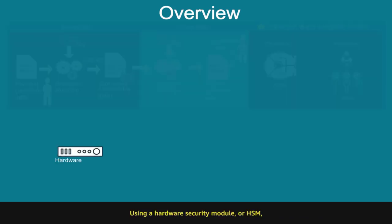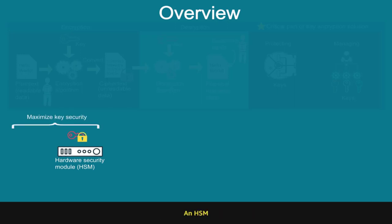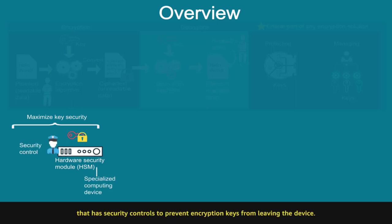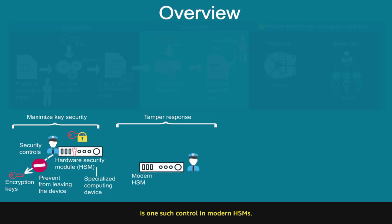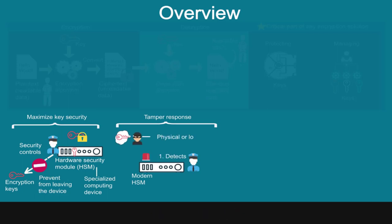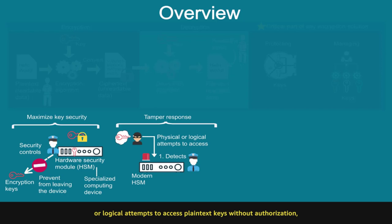Using a hardware security module, or HSM, is a best practice to maximize key security. An HSM is a specialized computing device that has security controls to prevent encryption keys from leaving the device. Tamper response is one such control in modern HSMs. When an HSM detects physical or logical attempts to access plaintext keys without authorization, it destroys the keys before the attack succeeds.